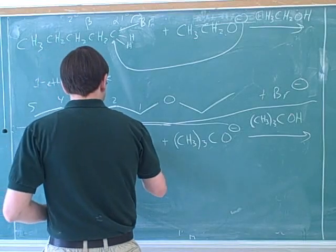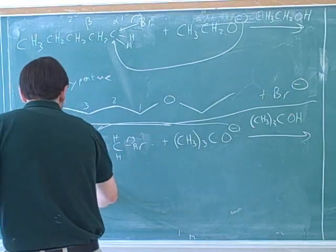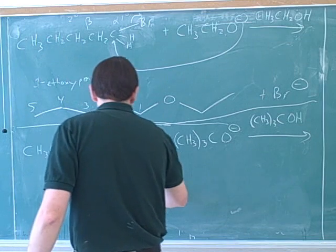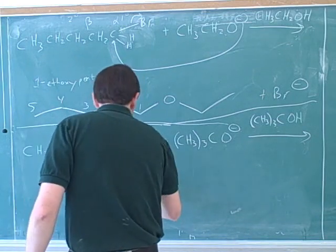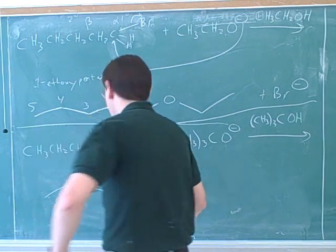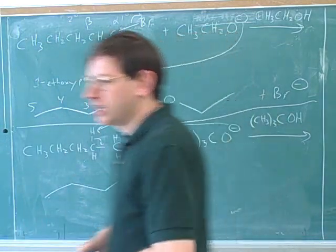You take the hydrogen from the beta carbon — 1, 2, 3, 4, 5 — 1, 2, 3, 4, 5 — and then you get a product that looks like this.